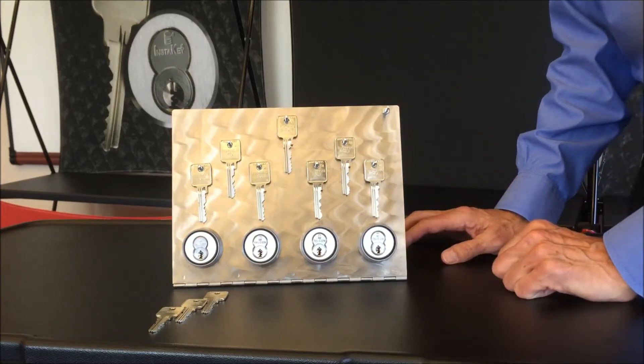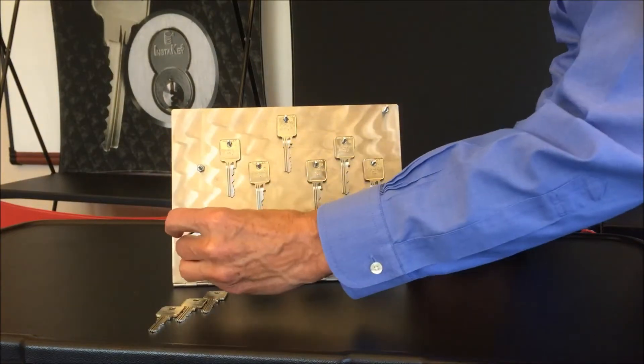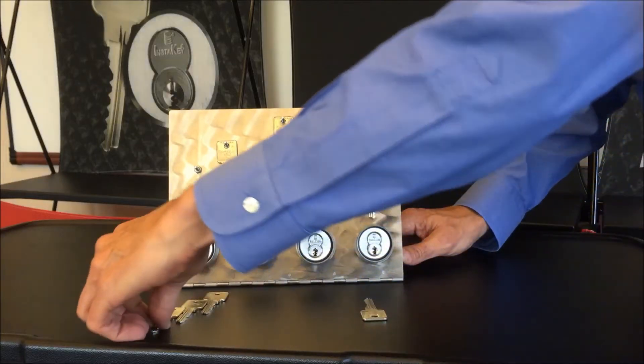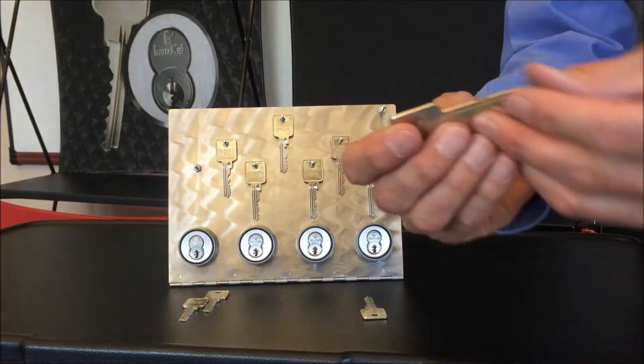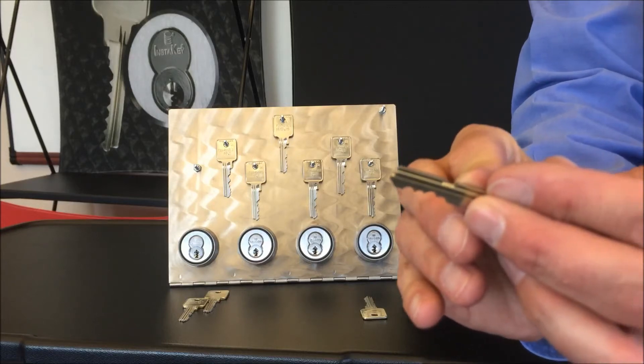In the event that we need to re-key a single operating level door, if this key were to go missing, we simply use what we term a step-change key, which is a key with a notch machined into the back of the blade.